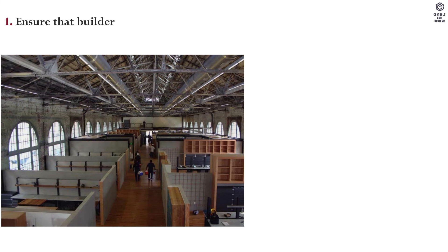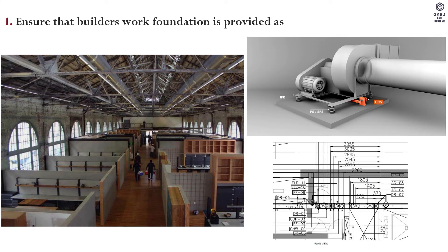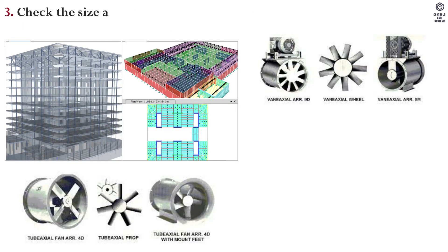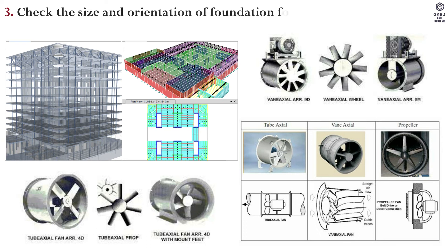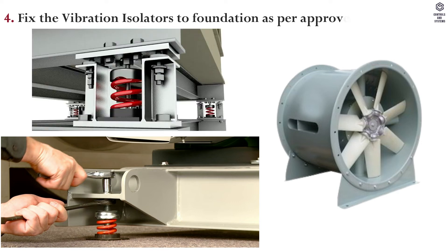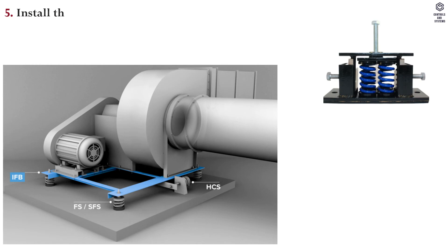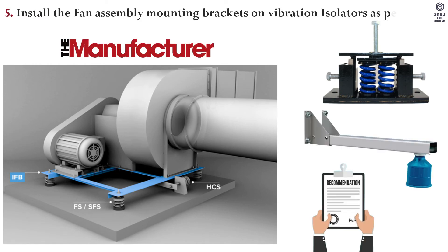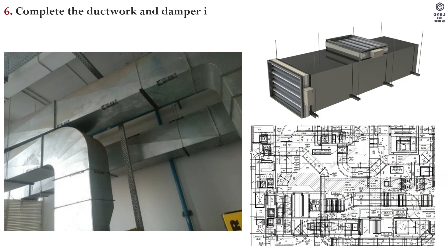Installation of floor mounted fans: 1. Ensure that builder's work foundation is provided as per approved shop drawing. 2. Ensure the level of foundation by spirit level. 3. Check the size and orientation of foundation for its suitability to install the fans. 4. Fix the vibration isolators to foundation as per approved submittal. 5. Install the fan assembly mounting brackets on vibration isolators as per manufacturer's recommendations. 6. Complete the ductwork and damper installation as per approved shop drawing.